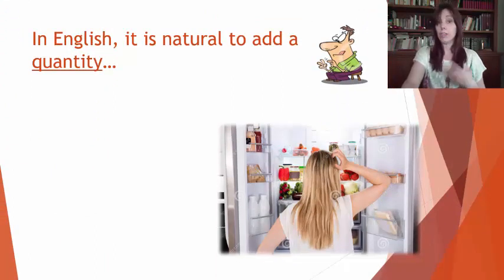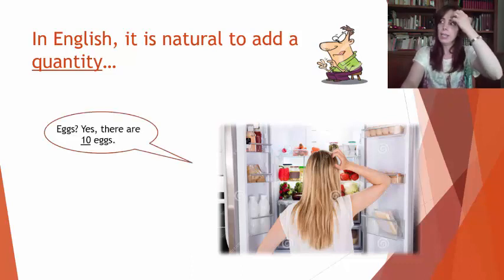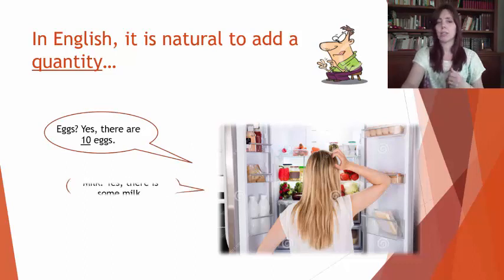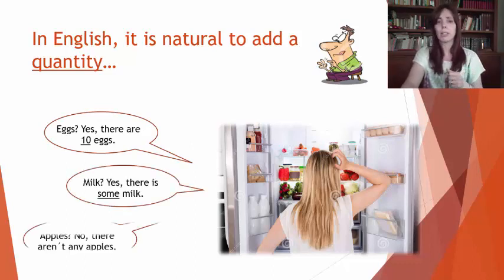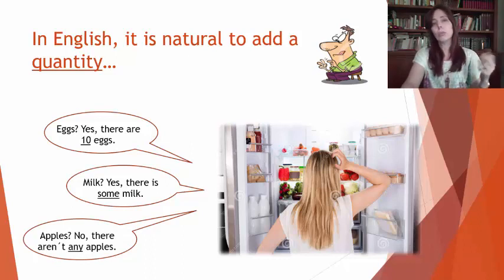So in English, it's very natural to add a quantity. So you open the fridge because you are preparing your shopping list or your grocery list, and you say, eggs. Yes. There are about ten eggs. And milk. Yes, there is some milk. Apples. Nope. There aren't any apples. You see? It's natural to give a quantifier.